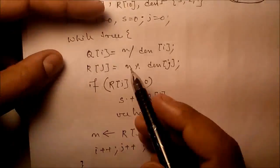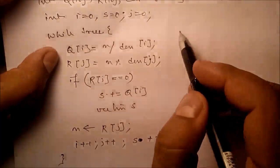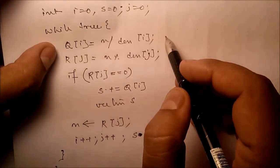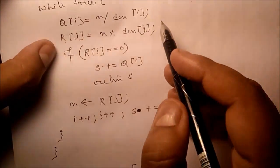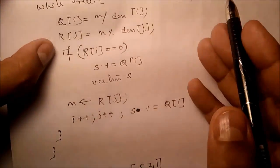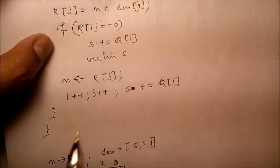Now in q we store how many coins are required for that particular denomination, and in r we store the remaining denomination, the remaining amount we have to return.